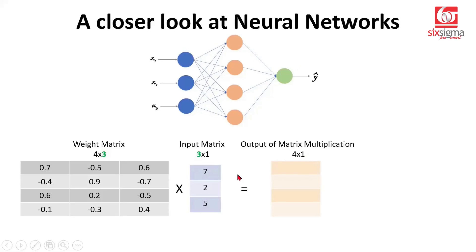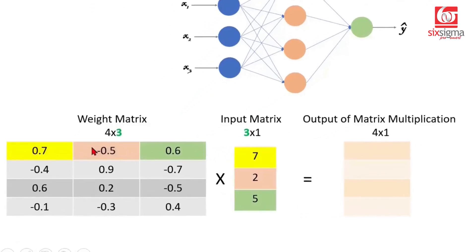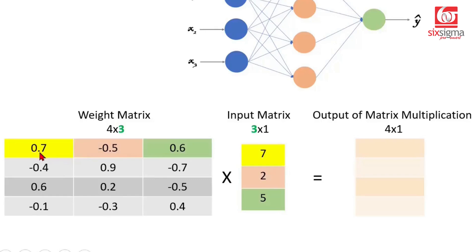Now, how does the matrix multiplication work? Some of you might be knowing it. Some of you may need some help with that. Let's give it a try. It is done element wise. So we select the first row and we multiply it with each element here. I've done the color coding here. You can imagine this 0.7 will be multiplied with this 7. This negative 0.5 will be multiplied with this 2 and this 0.6 would be multiplied with 5.